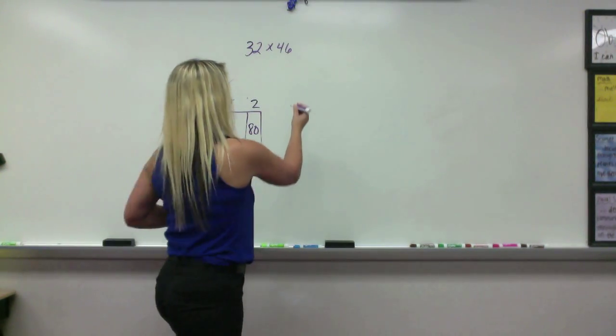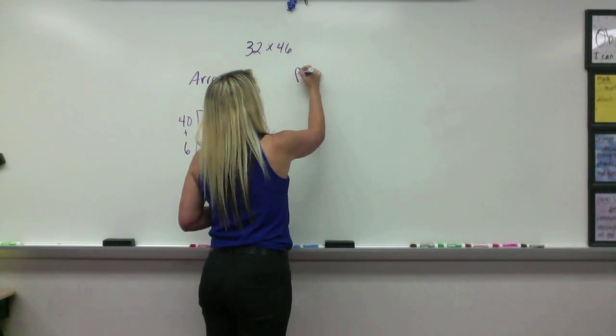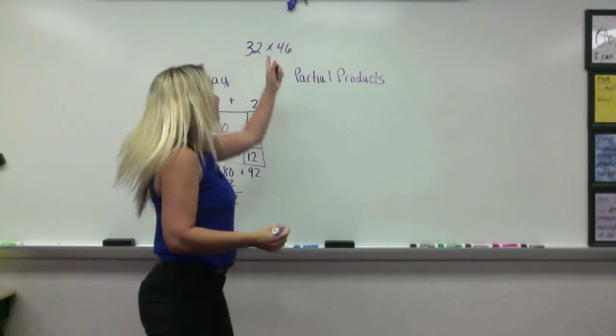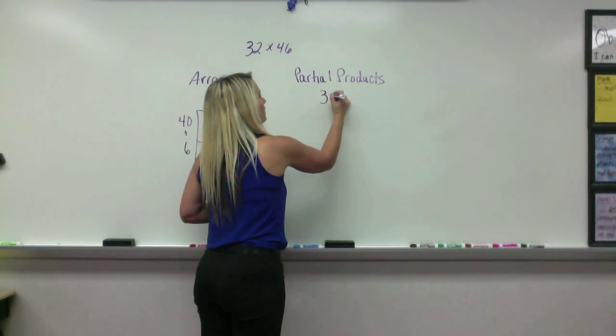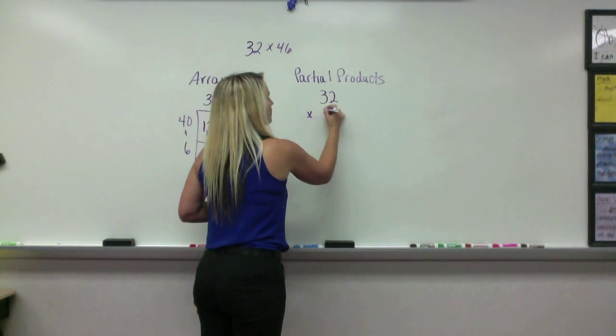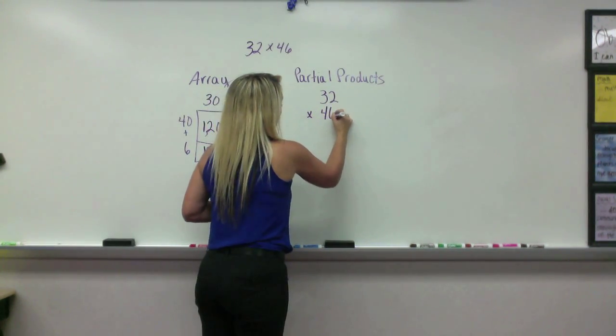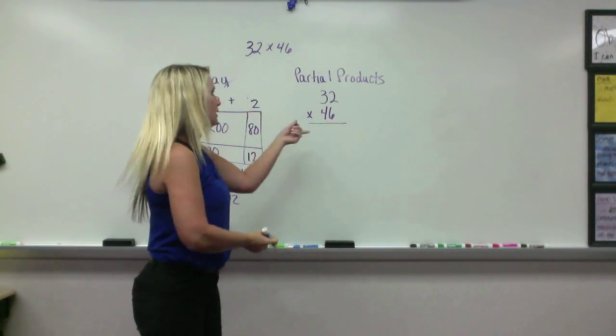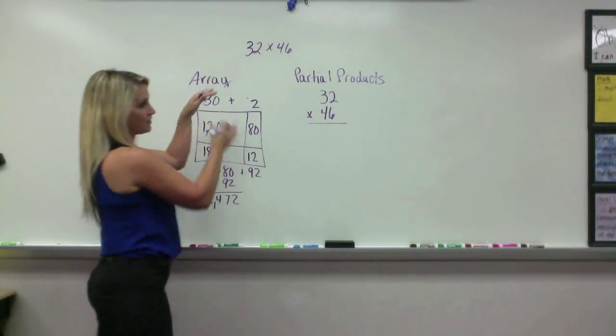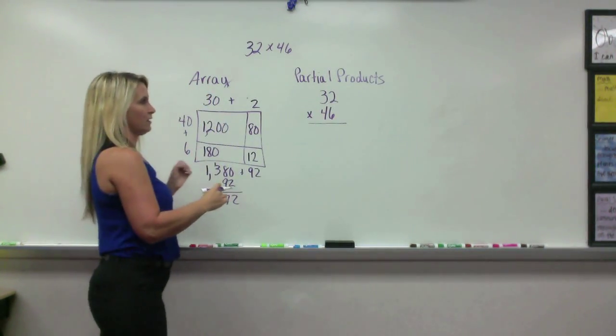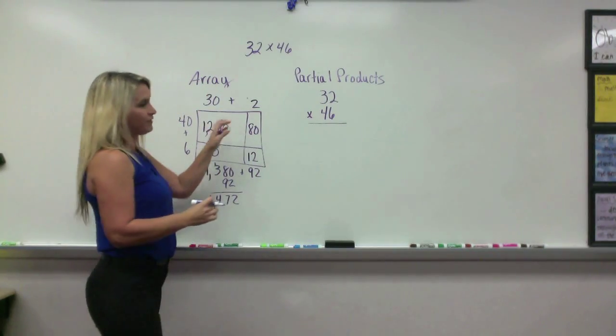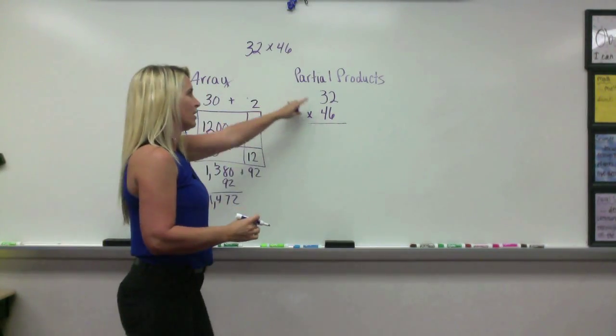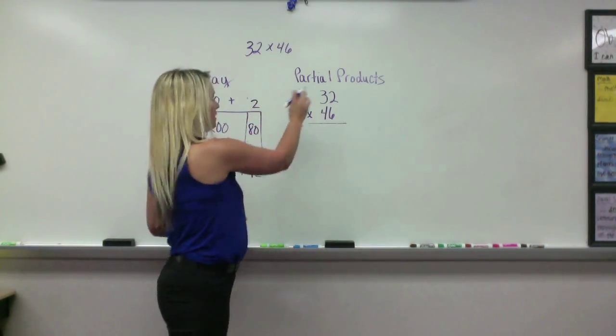Another way to do this is partial products. And for partial products, we write the problem this way, kind of old school, like we learned. But we solve it kind of the same way we do here. But they've moved out of using the visual of the array here, and they just do the multiplication from here.